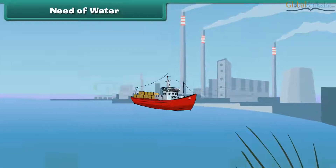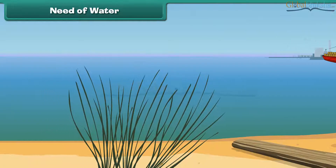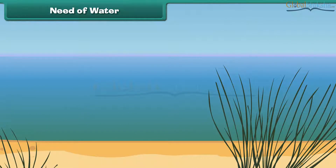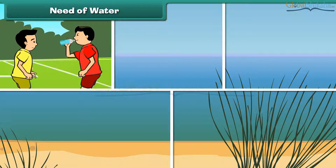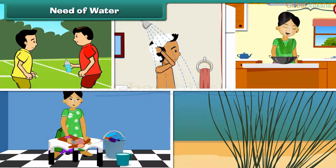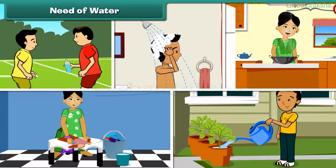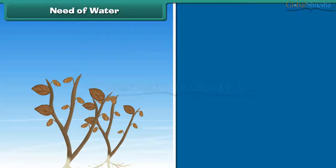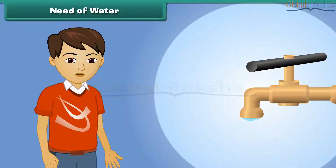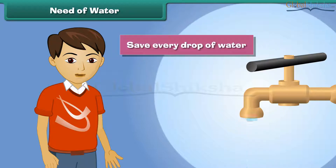Air is very essential for our life, but did you ever wonder why water is so important? We need water to drink, to bath, to cook, to wash our clothes, to water plants, and for so many other reasons. Without water, plants would die and people and animals would go thirsty.